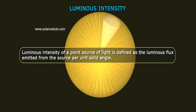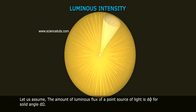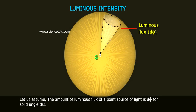Luminous intensity of a point source of light is defined as the luminous flux emitted from the source per unit solid angle. Let us assume the amount of luminous flux of a point source of light is dφ for solid angle dΩ.